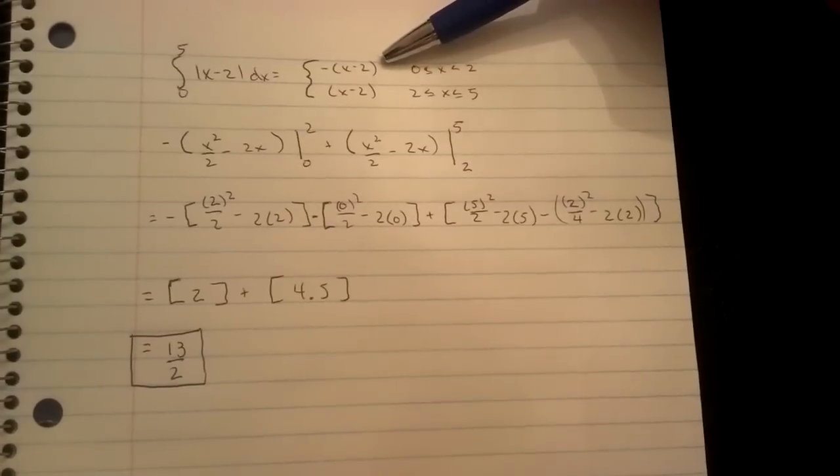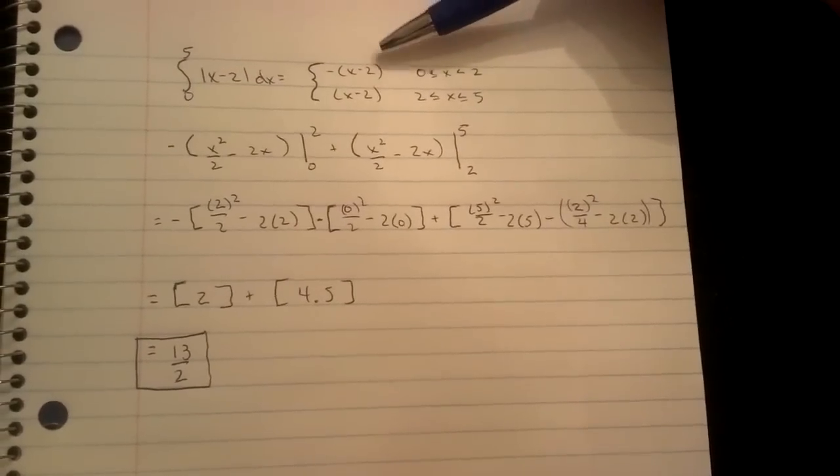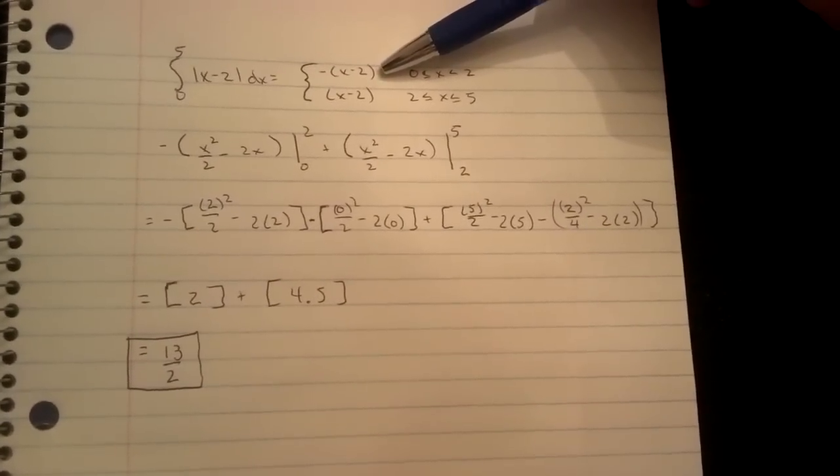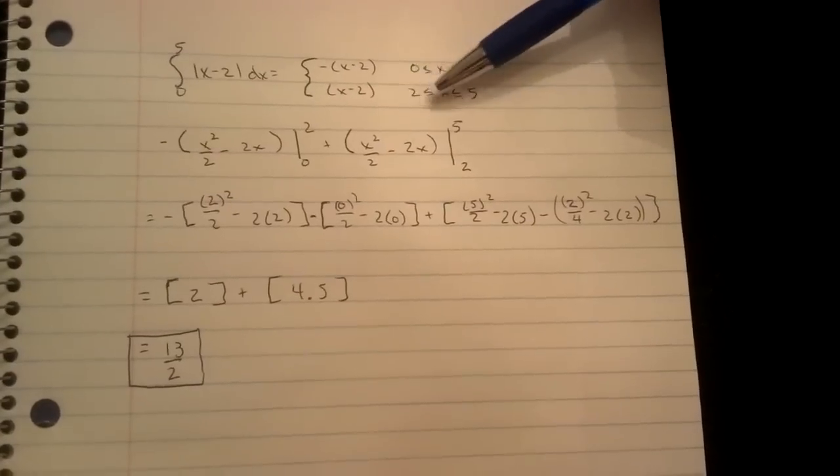The first step is to split it up into a piecewise function: one containing the negative portion of the graph, which is negative x minus 2, and the positive portion, x minus 2.